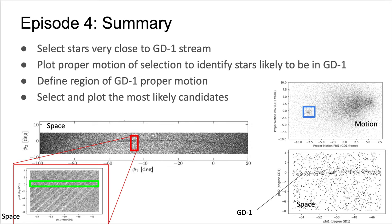In episode 4, we will take a much tighter region around GD1 and use it to identify the proper motion of GD1, which is coherent and different from the background stars. On the left, you can see in red the region around GD1 that we previously selected in the GD1 reference frame, and in green is the narrow region we are selecting within the red rectangle. This gives us a less complete but more pure sample of GD1 stars. We plot the proper motion of these stars in the upper right plot in the GD1 reference frame.